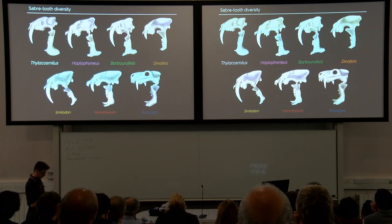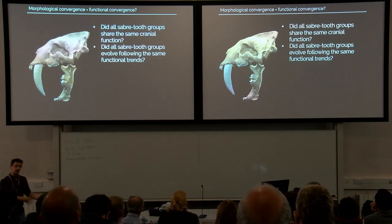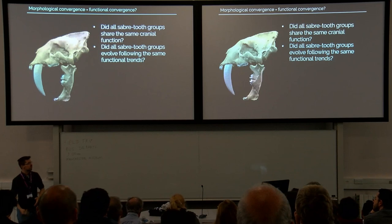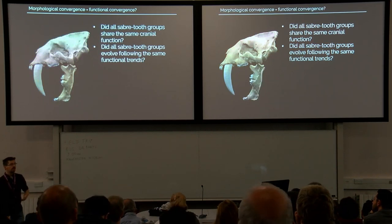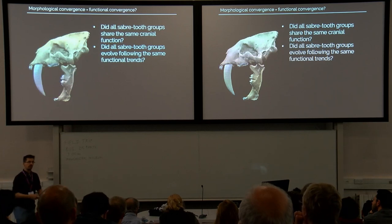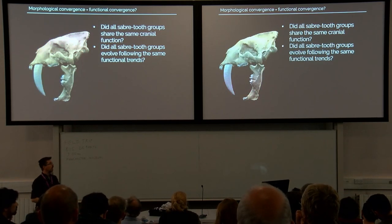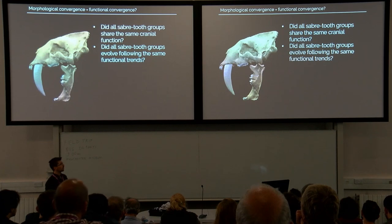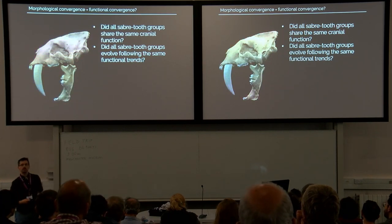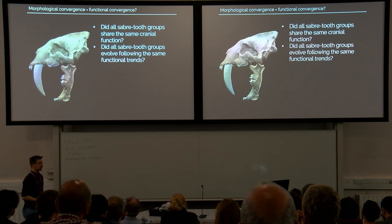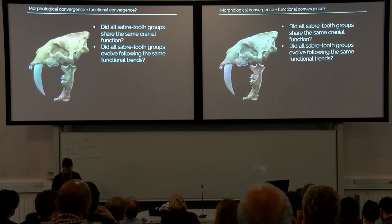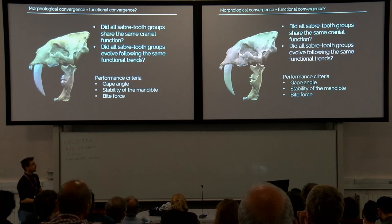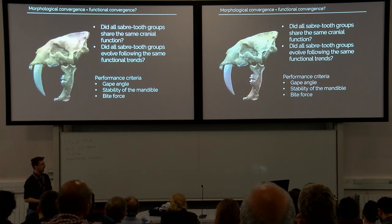That led to the question we wanted to ask: does this morphological convergence also indicate functional convergence? In very simple terms, just because all these taxa look very similar, does that mean they function in the same way? Can we therefore infer the same behavior and the same hunting or killing style? And the further question is whether we see convergent trends through time and through phylogeny — parallel trends from the most basal to the most derived taxa — which we wanted to test using different functional performance criteria such as gape angle, mandibular stability, and bite force.